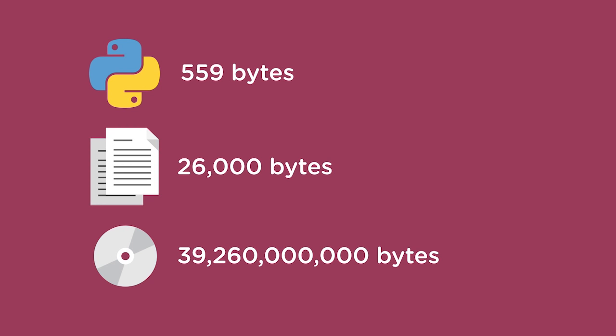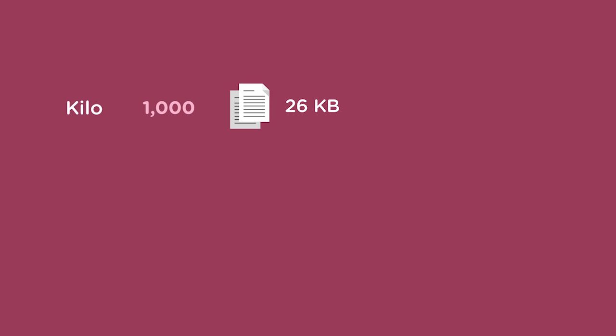There is a better way to refer to these large numbers by using different prefixes before the word byte. For example, kilo means 1,000, or one followed by three zeros. A kilogram means 1,000 grams; a kilometer means 1,000 meters. So instead of 26,000 bytes, I would say that my resume is 26 kilobytes.